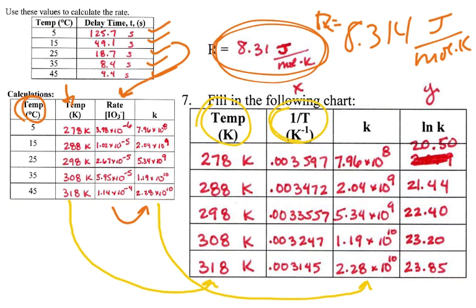Now that we have our temperature, we're just going to take one divided by the temperature. So, just take this number, say one divided by 278 and put it here, one divided by 288, and so on. Just fill those in.